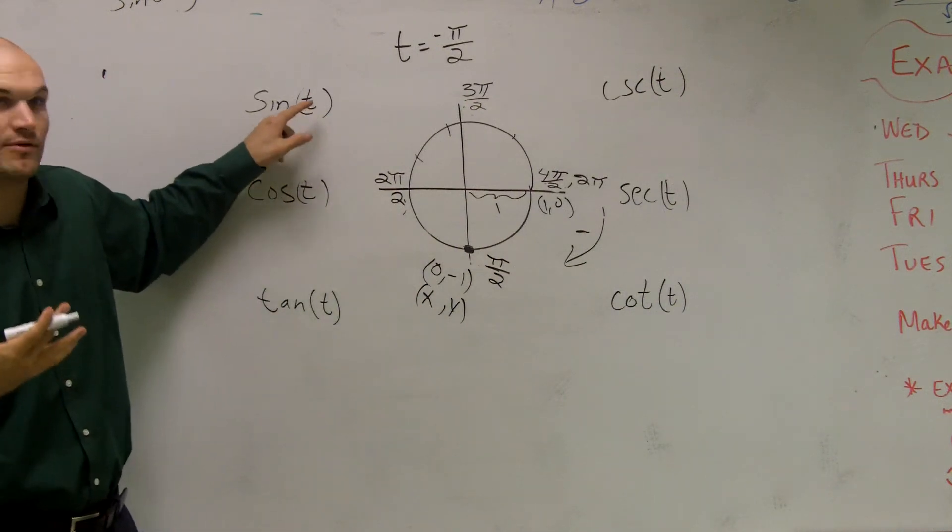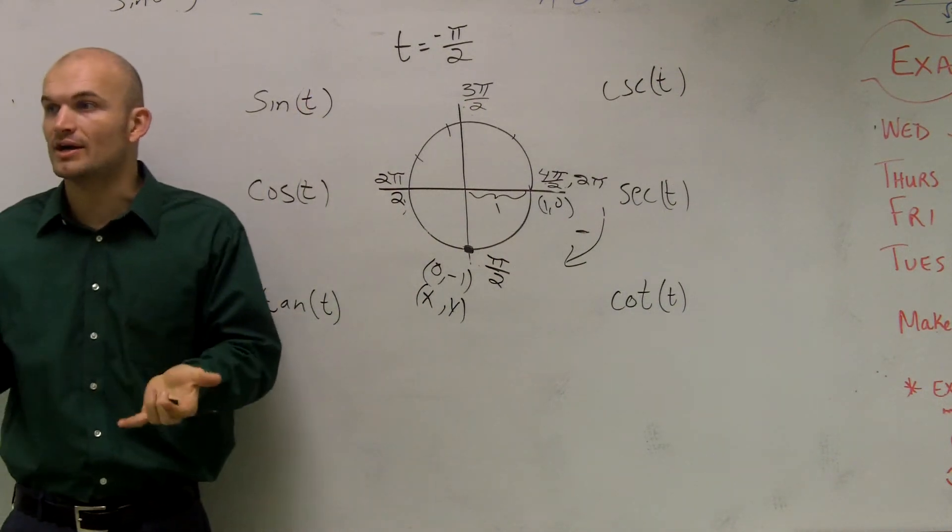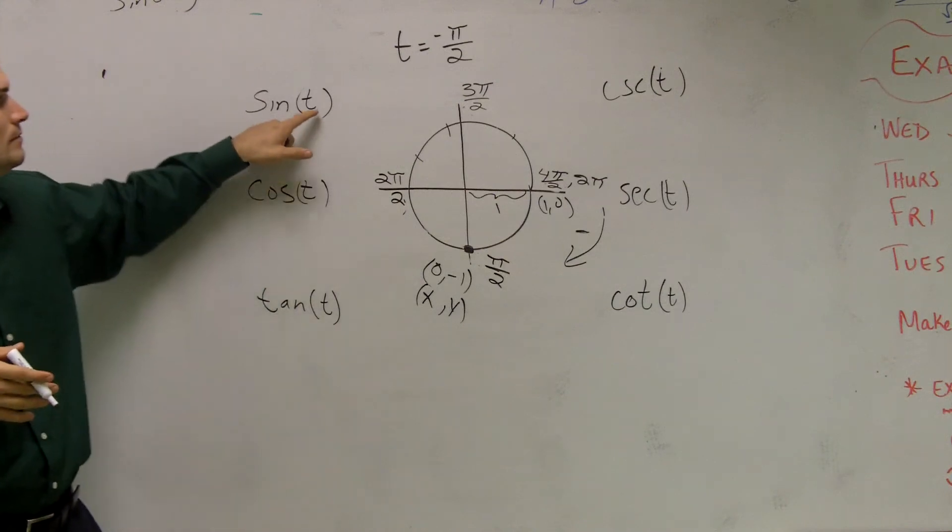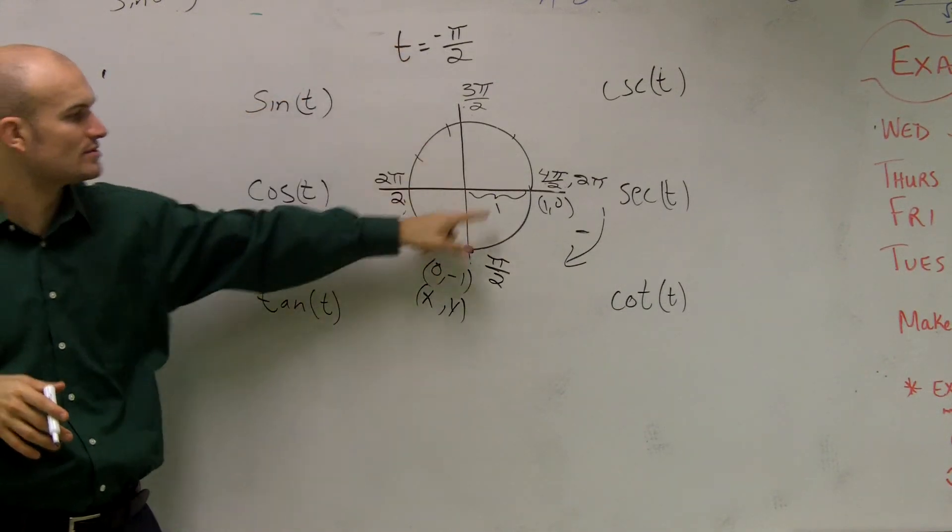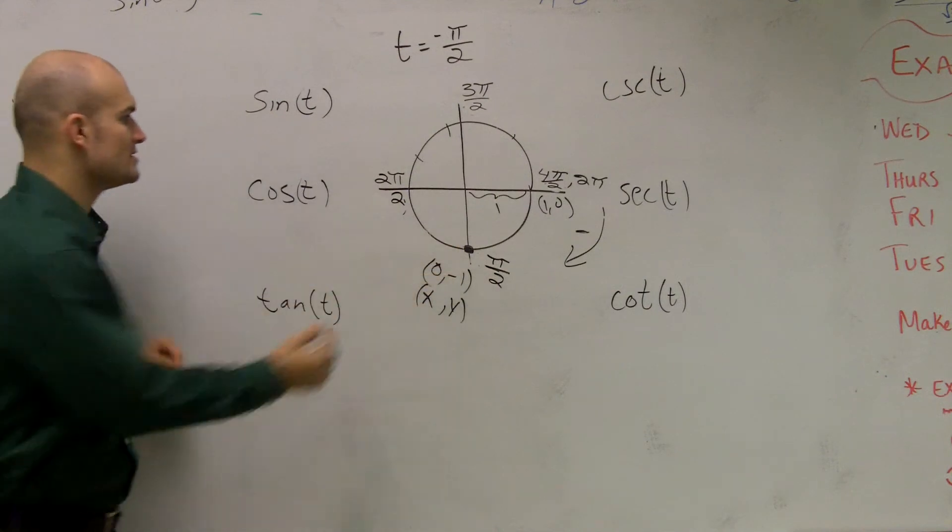So remember, sine of t, when you're evaluating for sine, that's finding the y value of your point. So what is the y value for my point when t equals negative pi over 2? The y value is negative 1.